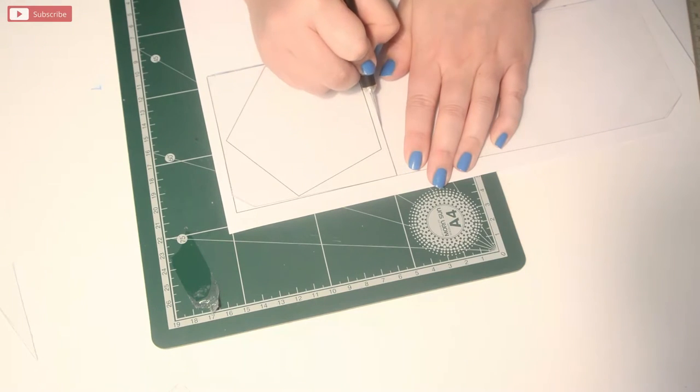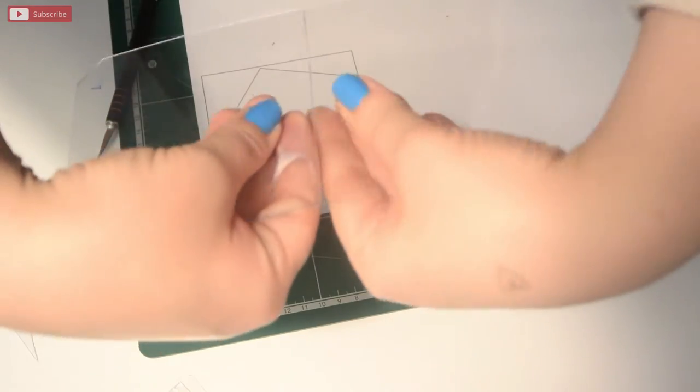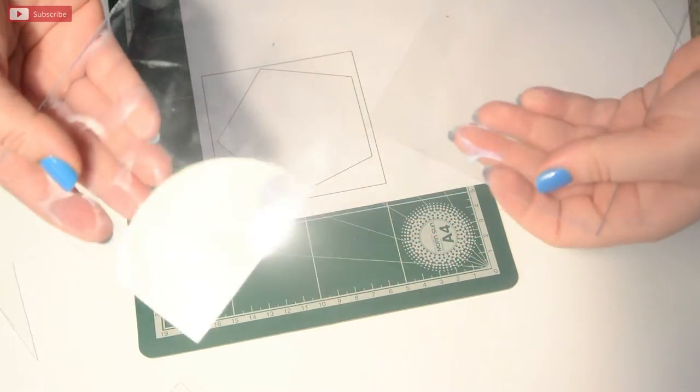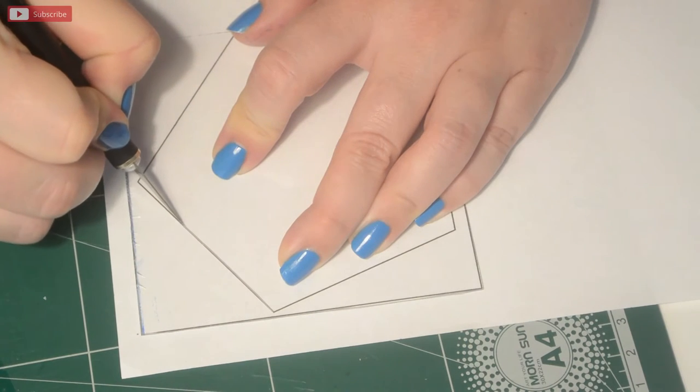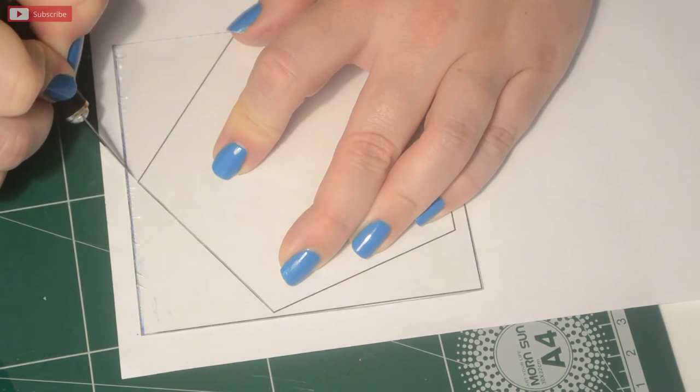Now line up that plastic with the template and then score down the line on both sides again and crack apart. With your piece of plastic over the template, you want to take your exacto knife and score down the 5 lines.